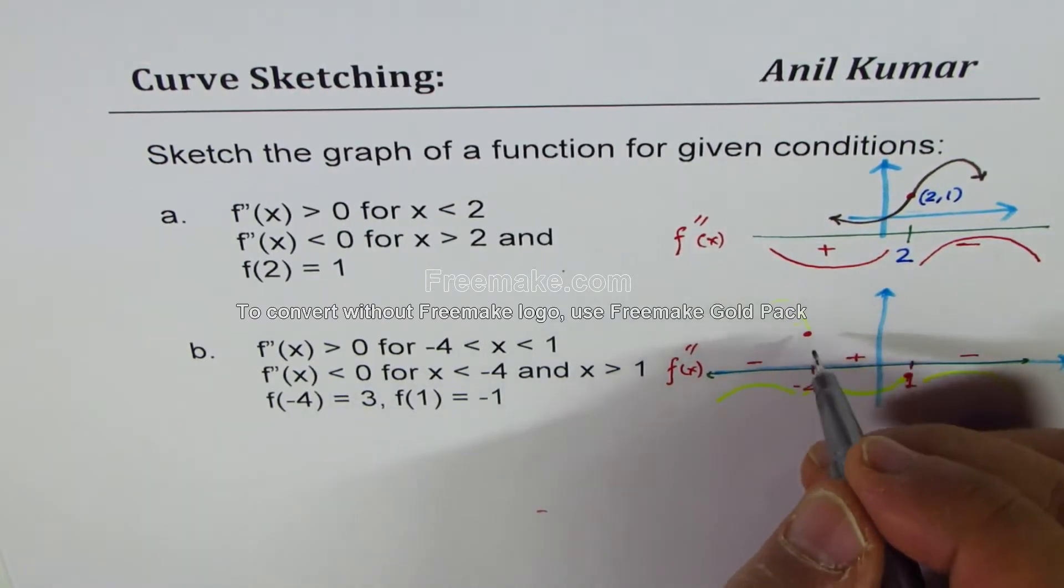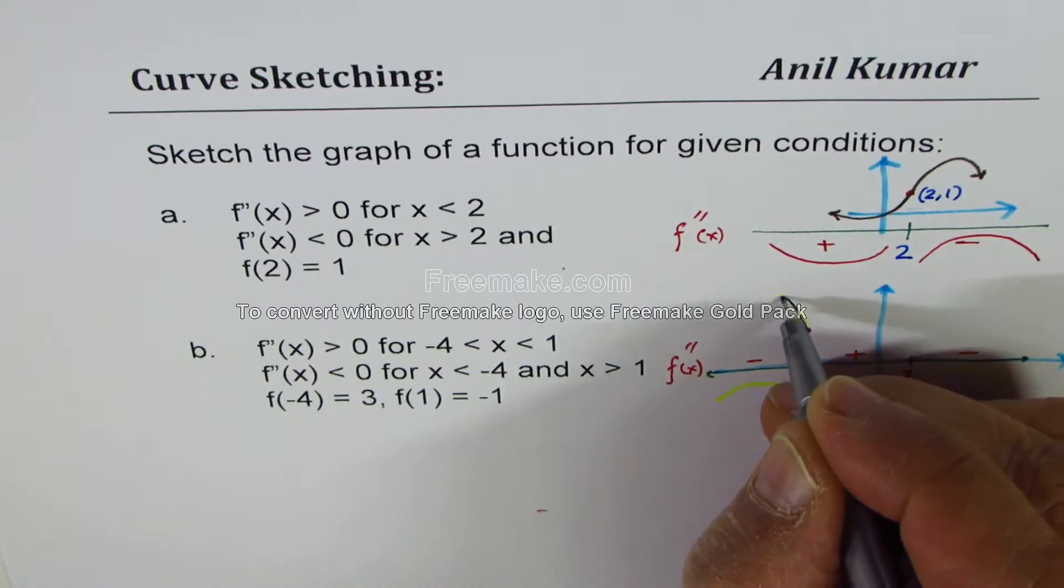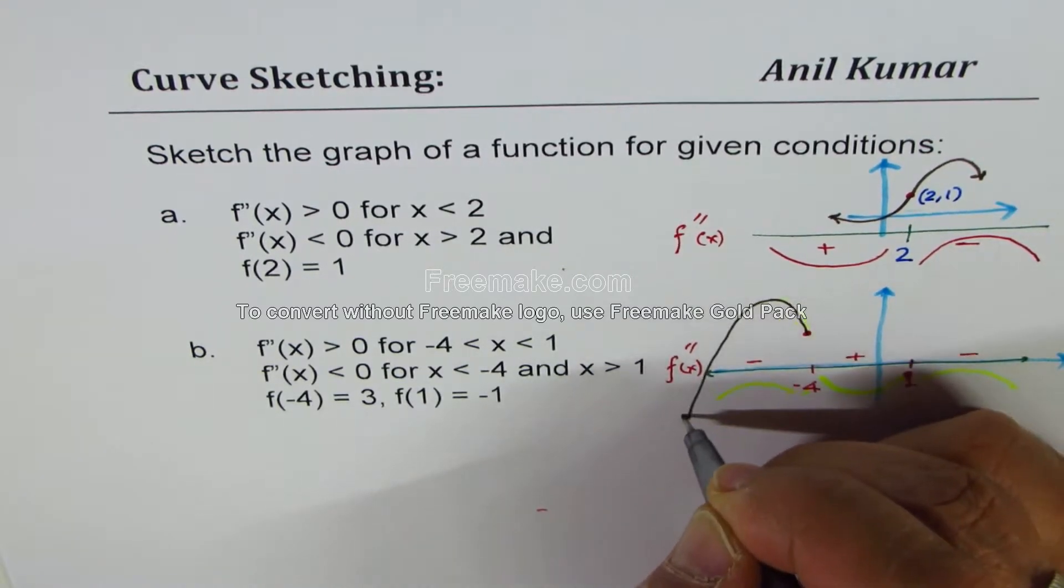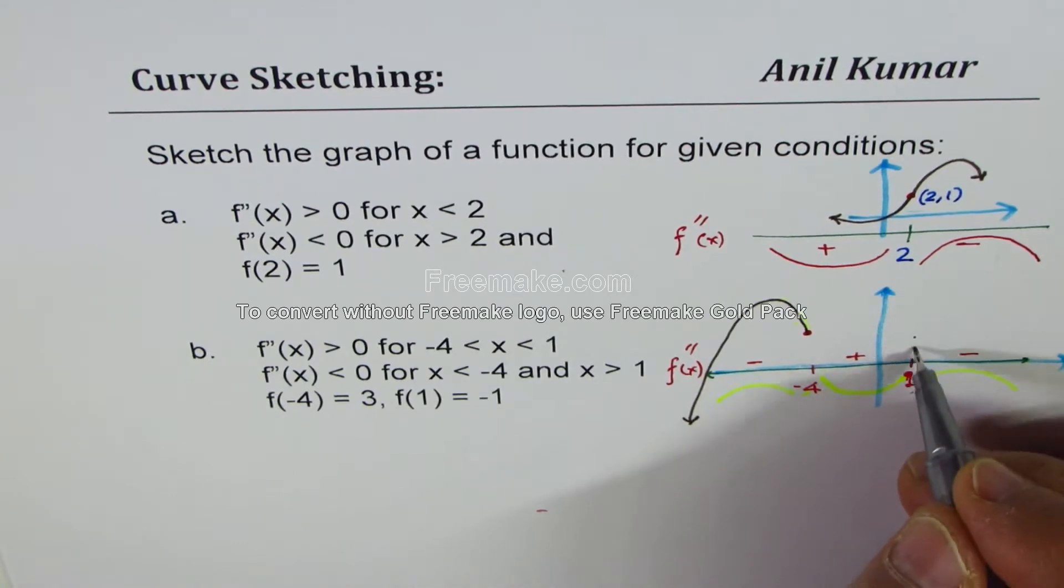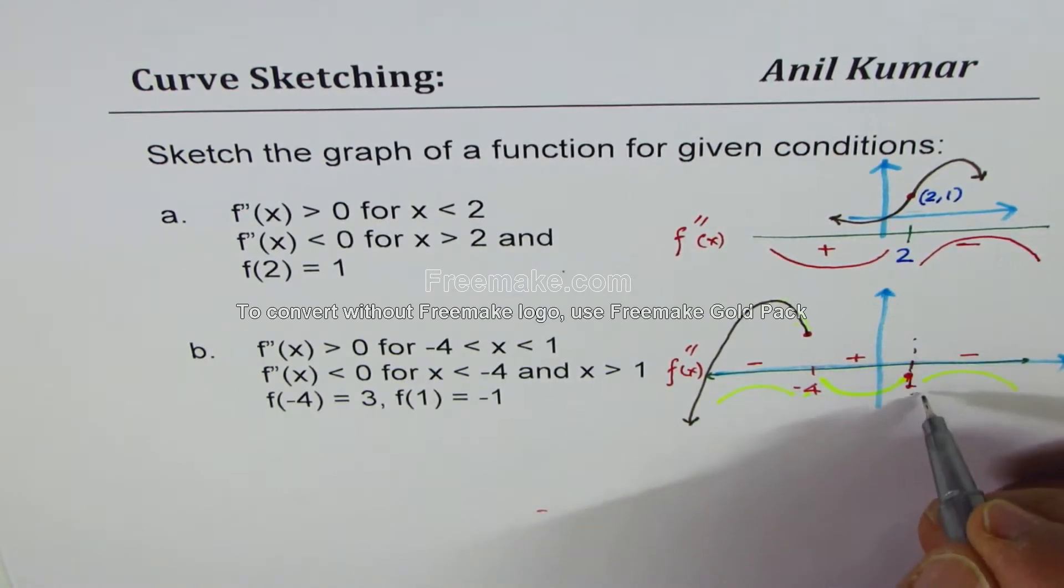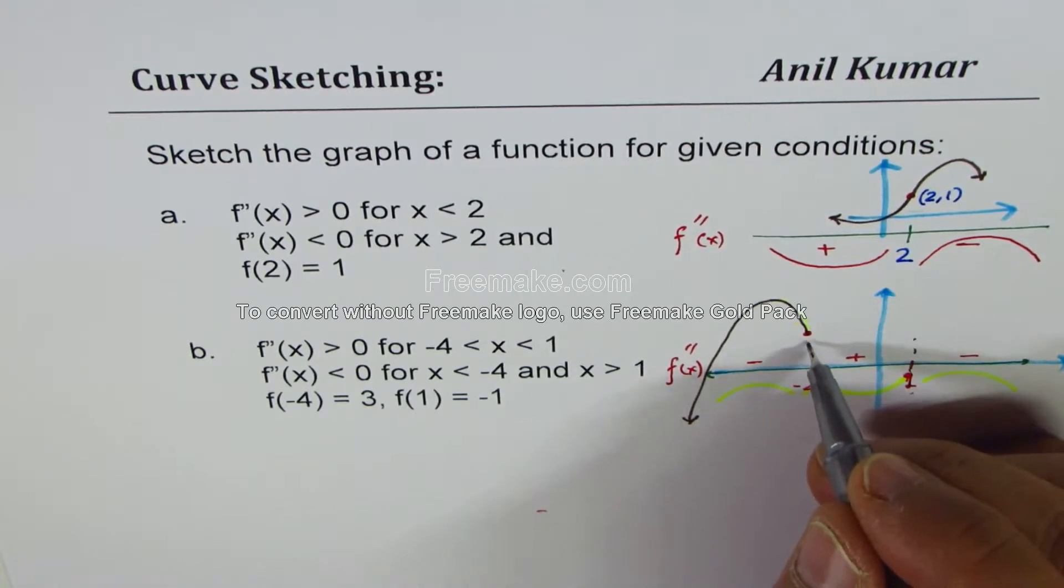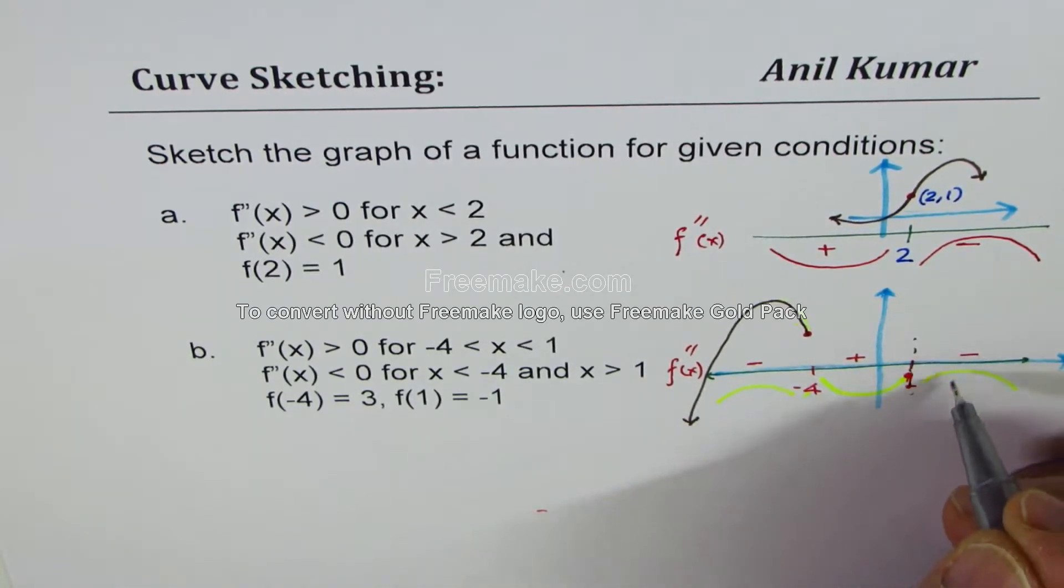So what I can do here is, at this point, I can go kind of like this because I have to go concave down. Now, somewhere here, I have to change the concavity to concave up from, I mean, from here, I'll go concave up and then concave down.